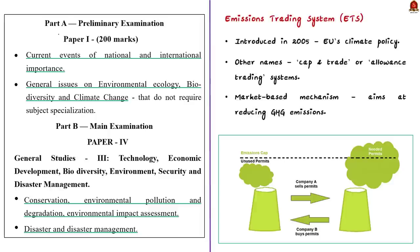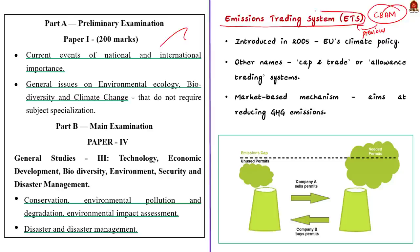The syllabus relevant to this discussion is highlighted here. To understand CBAM, we need to look at the European Union's previous climate policies. In 2005, the European Union adopted an important climate change policy known as the Emissions Trading System, also called Cap and Trade or Elements Trading System. The Emissions Trading System is a market-based mechanism that aims at reducing greenhouse gas emissions.